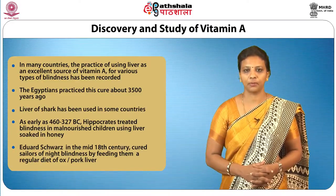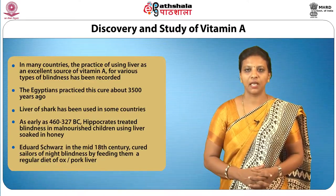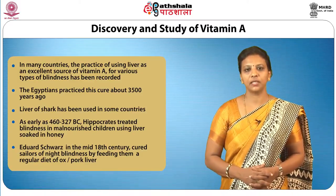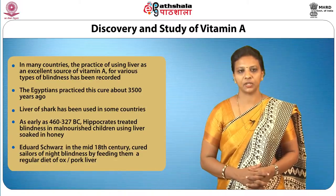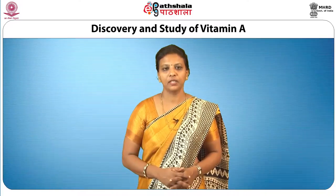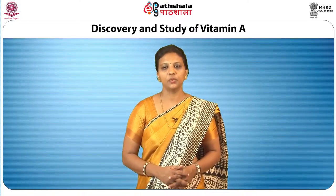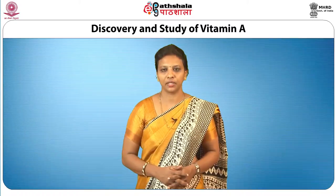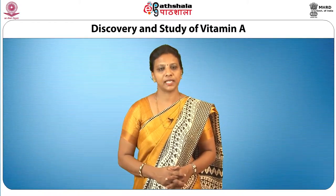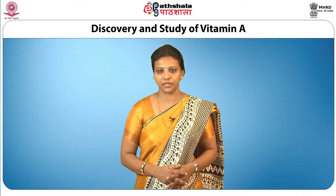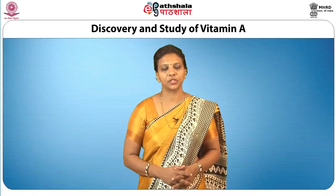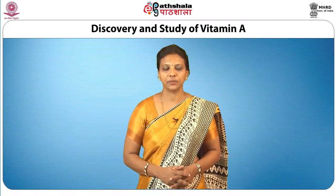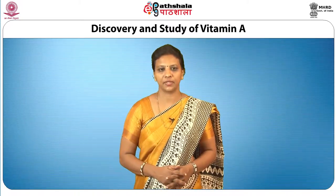Night blindness was a persisting problem among sailors on long voyages. Edward Schwartz, a ship's doctor from 1831 to 1862, cured them of the condition by feeding a regular diet of ox or pork liver. In 1904, xerophthalmia in undernourished children whose diet consisted of rice, barley, cereals and other vegetables were treated with liver and cod liver oil by Japanese physician M. Mori, giving excellent results. He also discovered that cod liver oil was more effective than liver in restoring visual functions, even reversing keratomalacia, characterized by corneal ulceration, severe dryness of the eyes and infection.